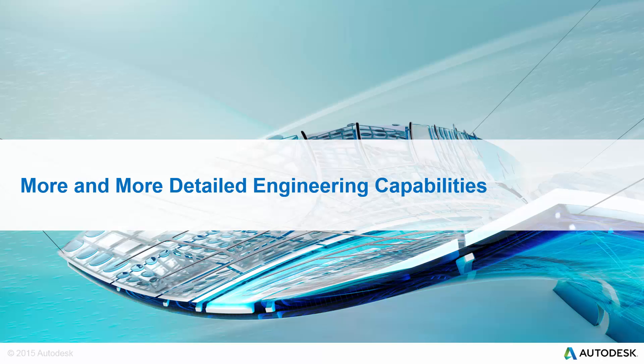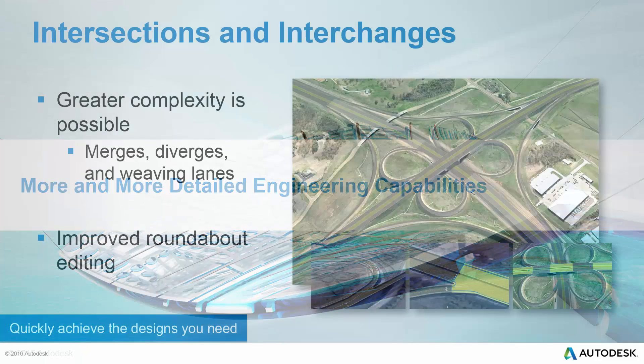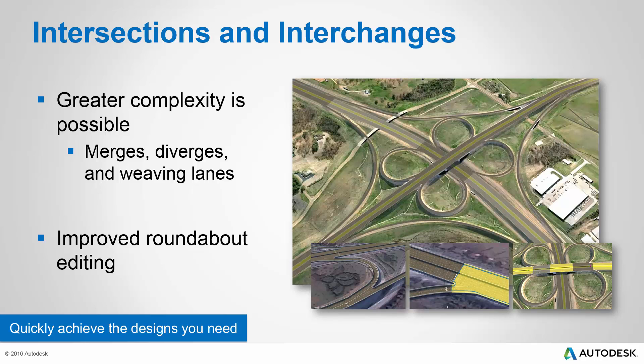Now let's discuss more and more detailed engineering capabilities. InfraWorks 360 has developed with each new release in its ability to create more complex and engineering-related designs. When you design complex interchanges, you'll find that greater complexity is possible, especially when designing merges, diverges, and weaving lanes — including multi-lane on-ramps and off-ramps. Roundabout editing has also gone even further, making it easier and more efficient than ever. This allows you to quickly achieve the designs you need, eliminating the need for workarounds.